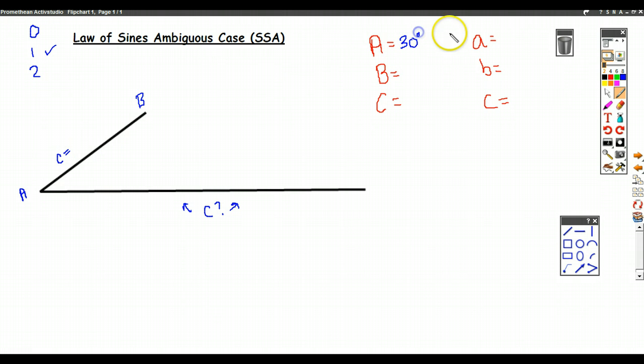And let's say in this case, angle A is 30 degrees. Side A, let's say, is 4 this time, and side C, let's say, is 8 again. So this would be 30 degrees, and that would be 8.